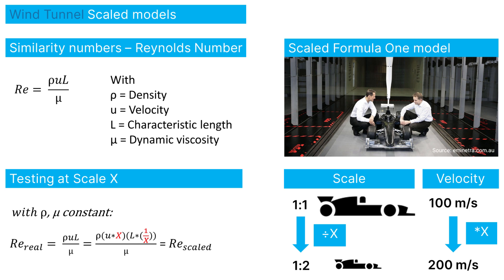And this can make you hit the speed limit of the wind tunnel again. Or, even more impressive, hit the limits of incompressible flow, which is around max 0.3 Mach. So working with scaled models is also a delicate balance.